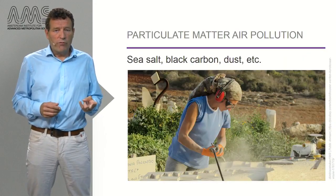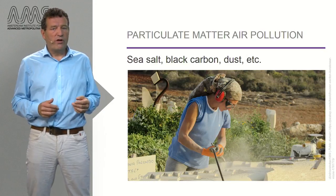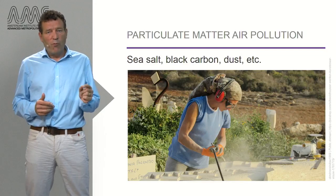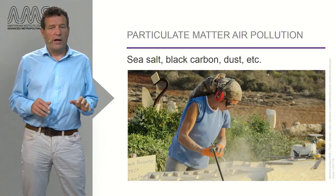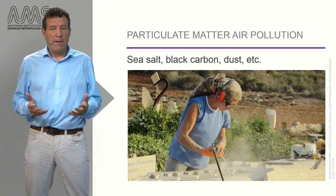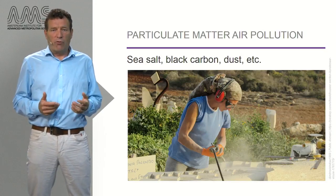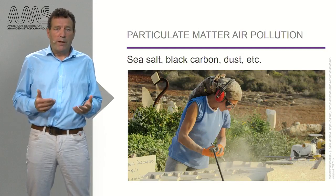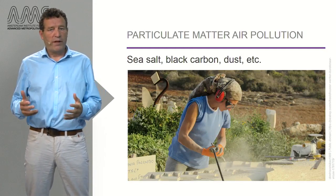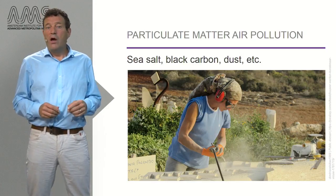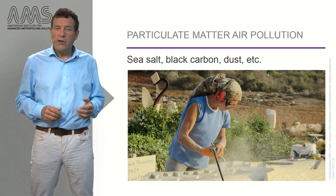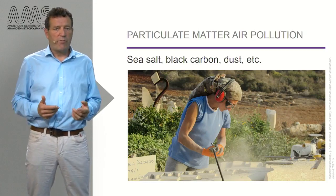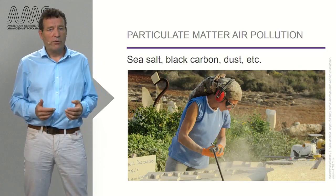A second group of air pollutants that received considerable attention by scientific research in recent years is in the form of small particulates that float in the air, called particulate matter or PM. Depending on the size of the particulates, these are called PM2.5, PM10 and TSP — total suspended matter. Without going into detail, particulate matter may contain a wide variety of both natural and man-made substances, such as sea salt, black carbon and dust.